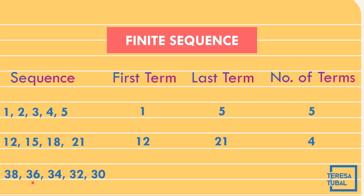Third example: 38, 36, 34, 32, and 30. The first term is 38, the last term is 30, and the number of terms is 5.